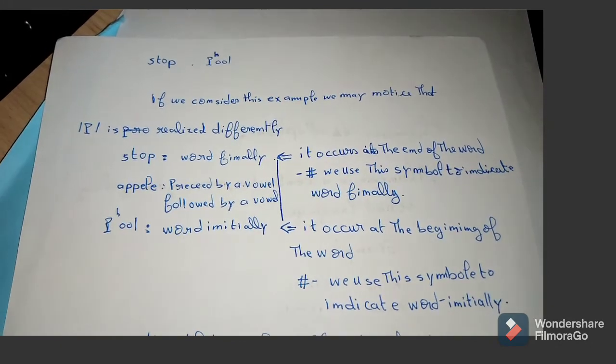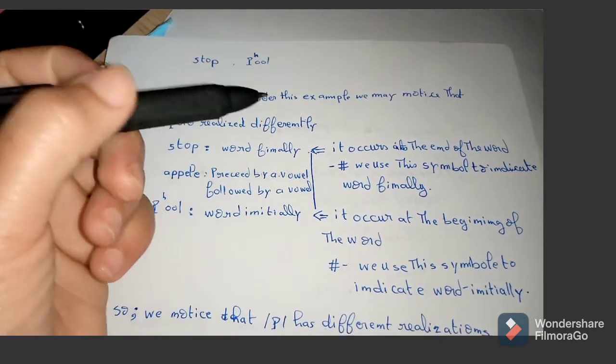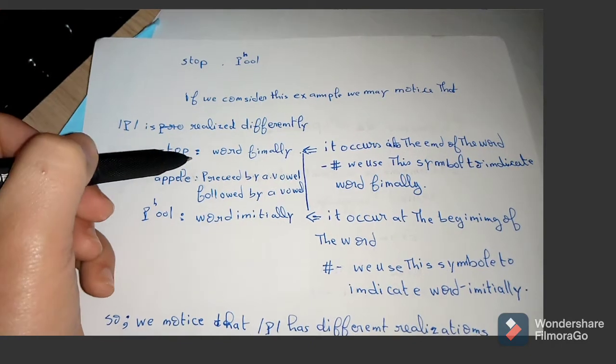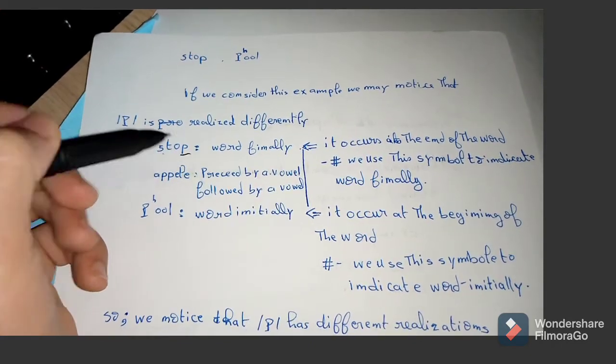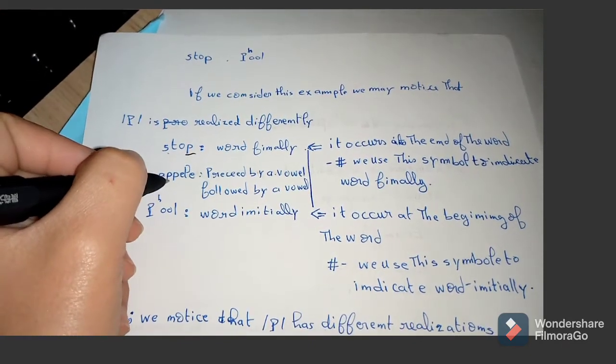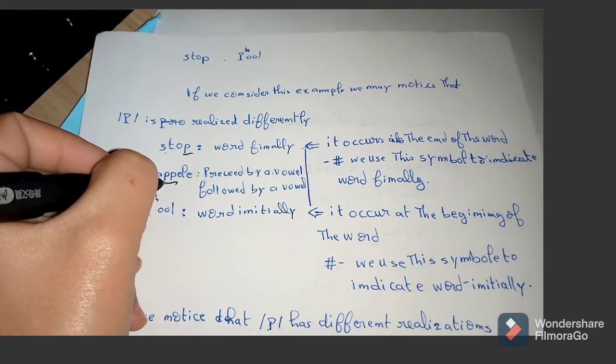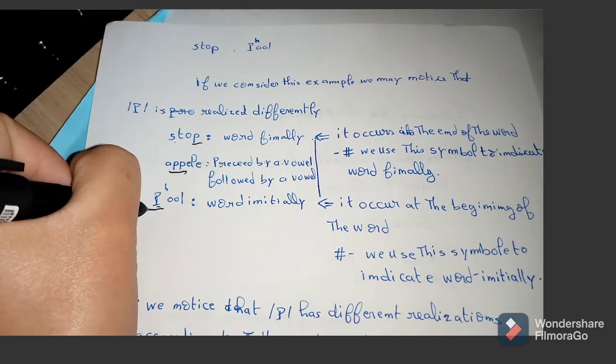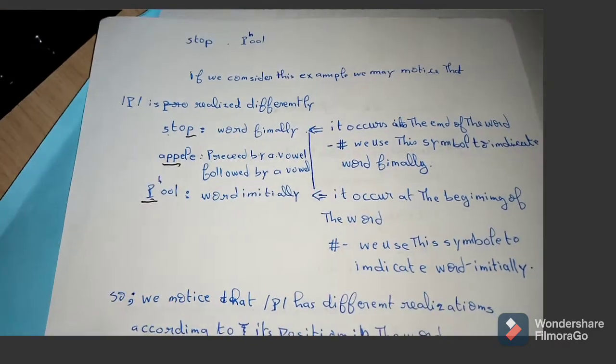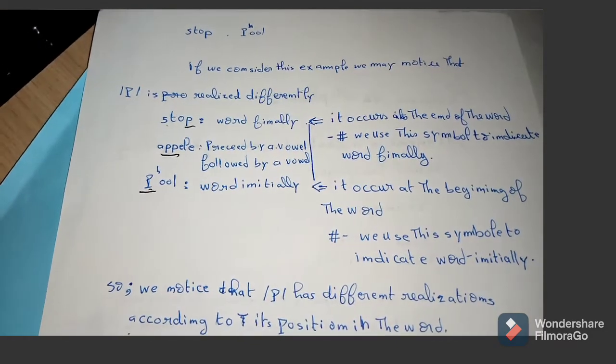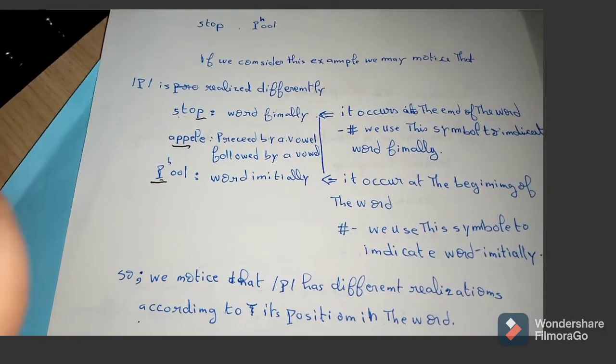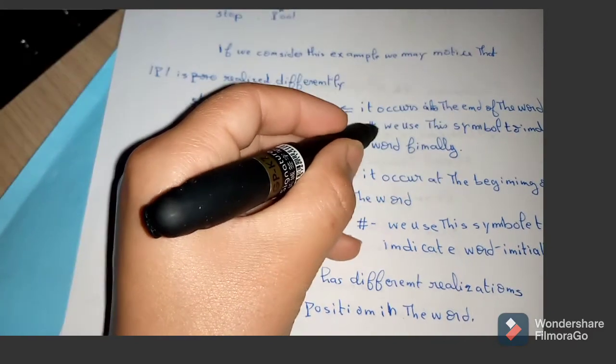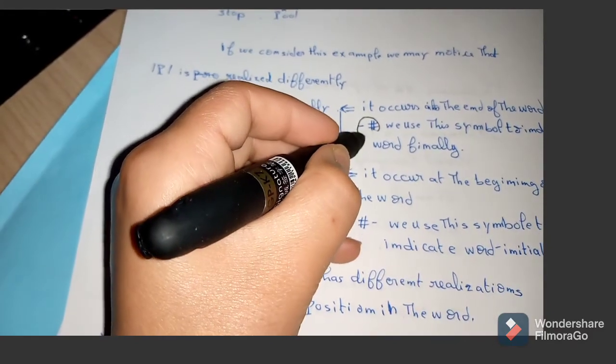Whereas in the word 'apple', P occurs between two vowels. It is preceded by a vowel and followed by a vowel. In the word 'pull', P occurs at the beginning of the word, so it is word-initially. And we have something that is different from the other P.